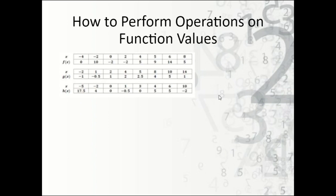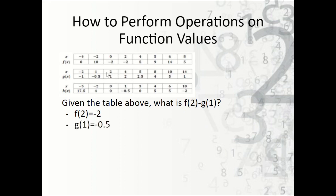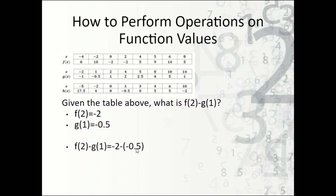Now, how do we perform operations on function values? Given the table, what is f of 2 minus g of 1? We find f of 2 and subtract g of 1 from it. Looking at the table, f of 2 is negative 2 — when x is 2, y is negative 2. Then g of 1 is negative one half, or negative 0.5. So f of 2 minus g of 1 is negative 2 minus negative 0.5, which is really plus 0.5, giving us negative 1.5 as our solution.